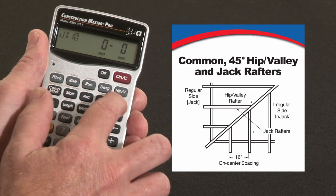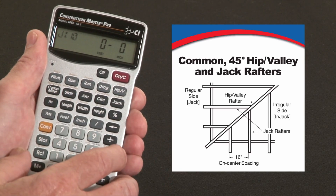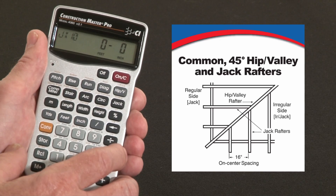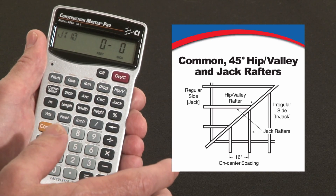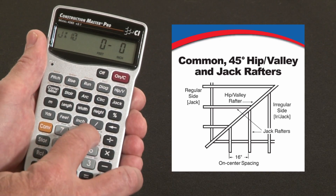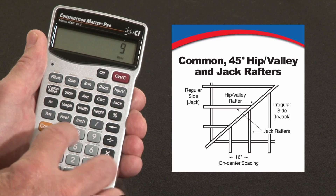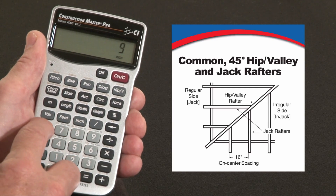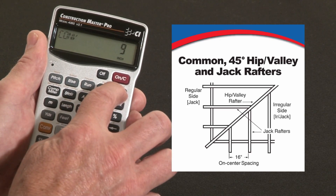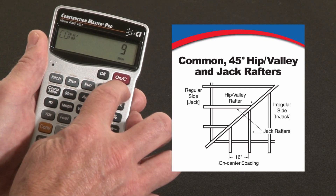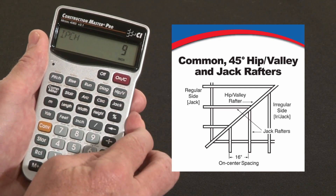Now let's say we have a dual pitch roof. The second pitch is a 9 inch pitch, so I enter 9 inches. What I do with this is hit Convert, and over the hip and valley key it says irregular pitch, so I enter it that way.